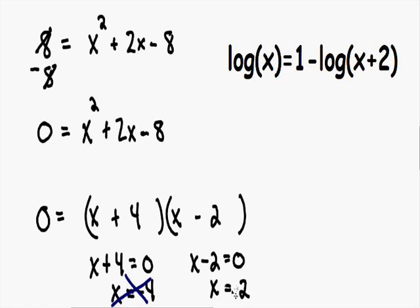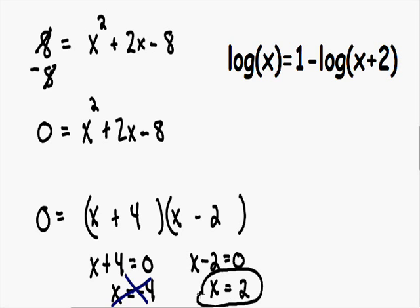Now let's double check x = 2. Plugging that in for x in our first log, instead of log of x we get log of 2 — 2 is positive, so that's okay. In our second log, instead of log of (x + 2) we get log of (2 + 2), which is log of 4 — 4 is positive, so that's fine. Since the inside of both logs are positive, x = 2 is valid and is our only solution to this logarithmic equation.